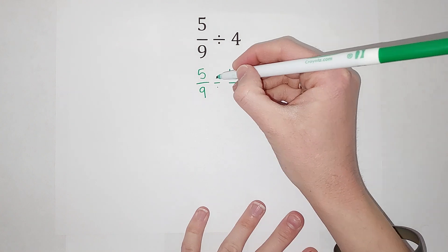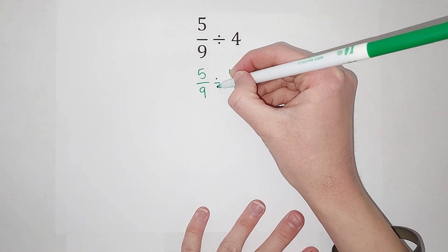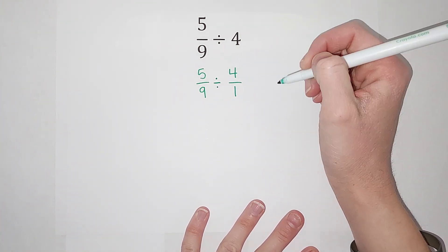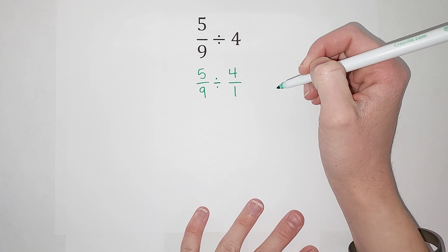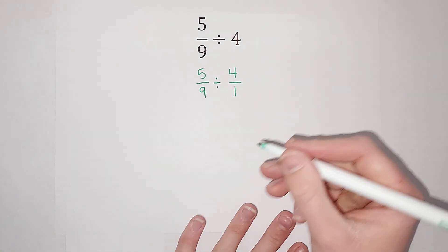Whenever I divide fractions, all we do is flip the second one and multiply. If you're wondering why this works, I'll link a video in the corner explaining.